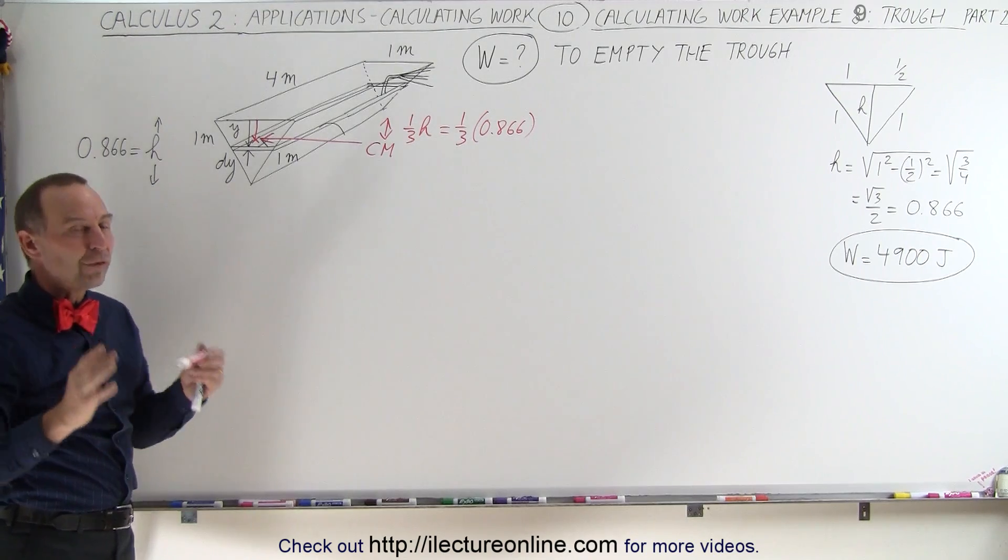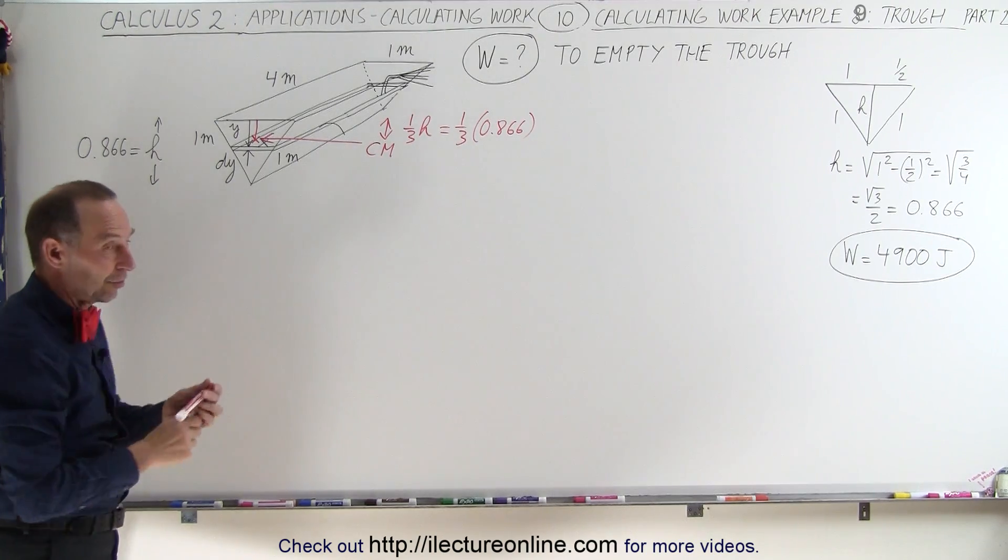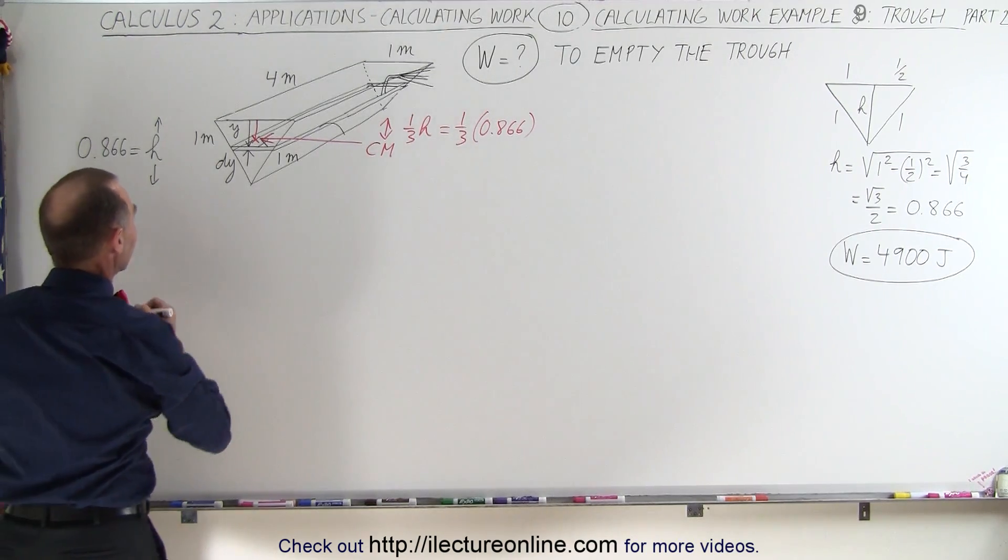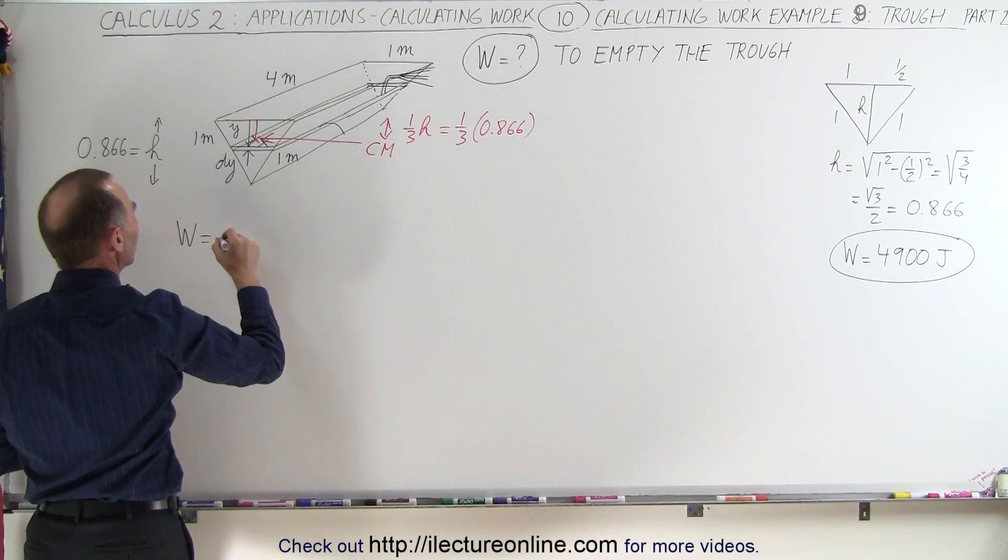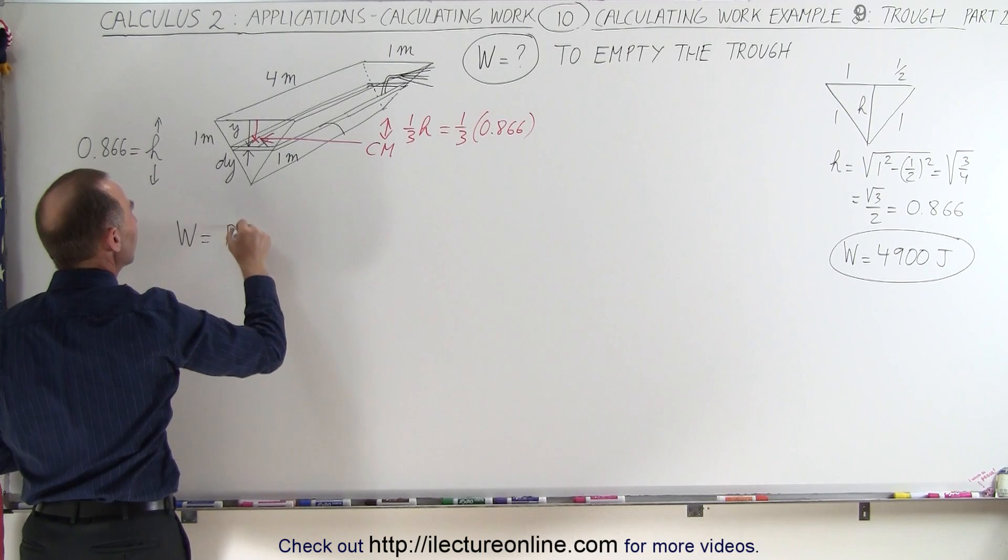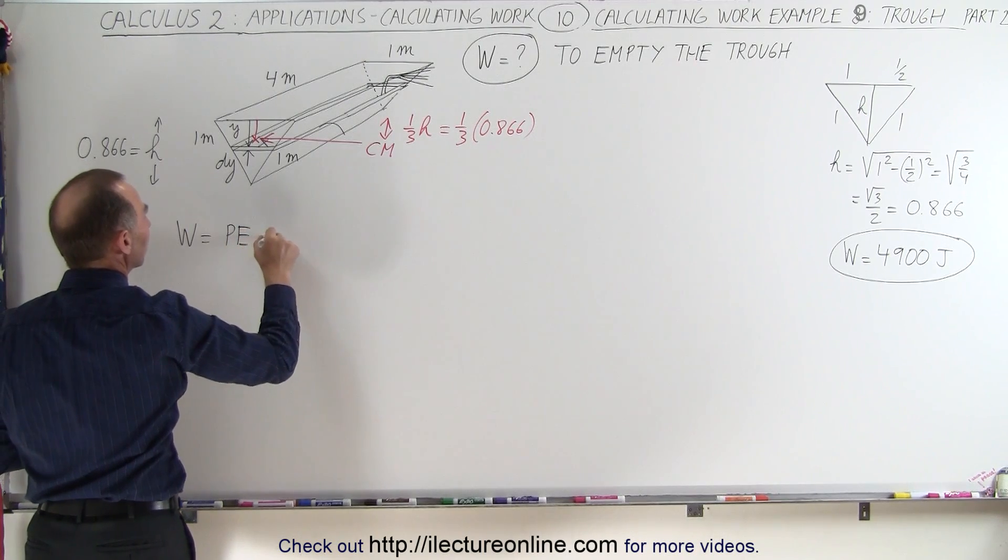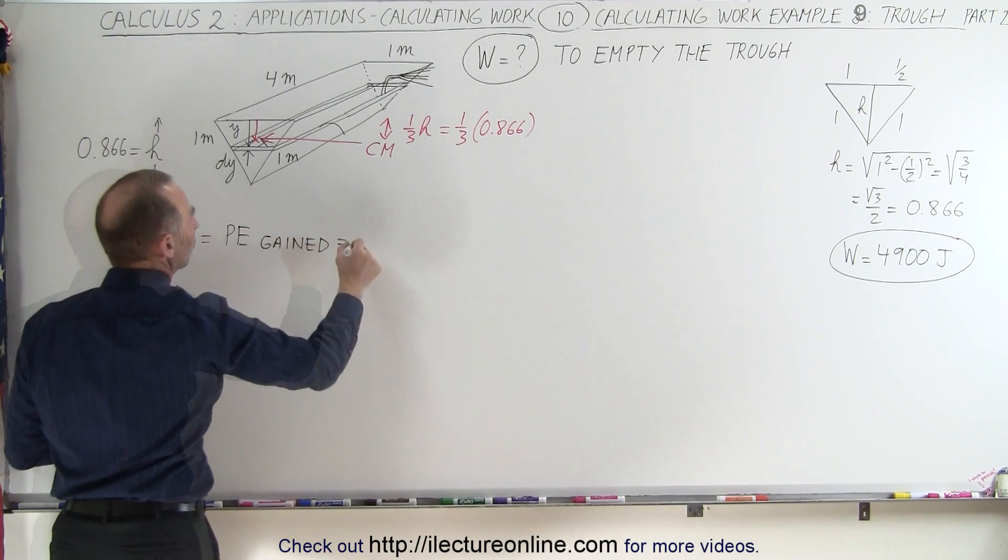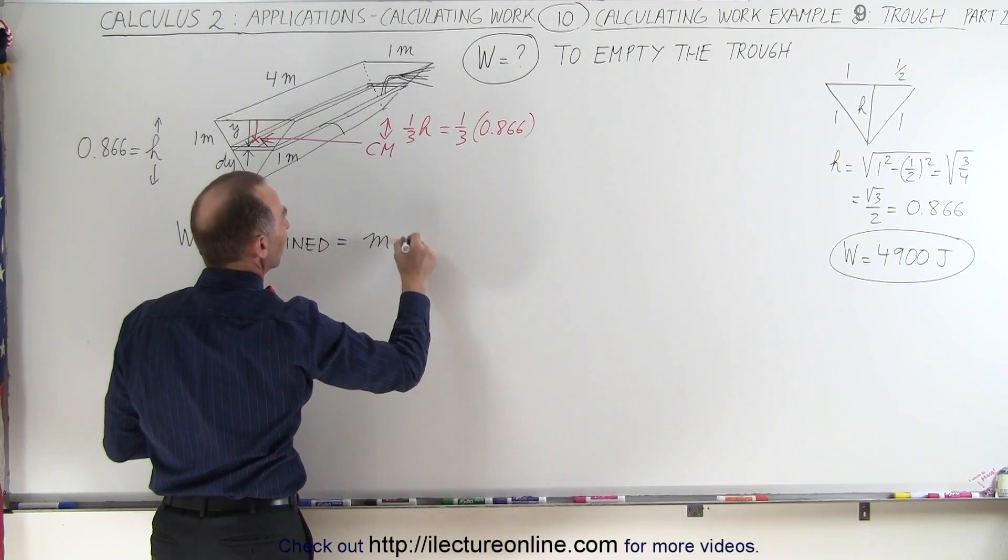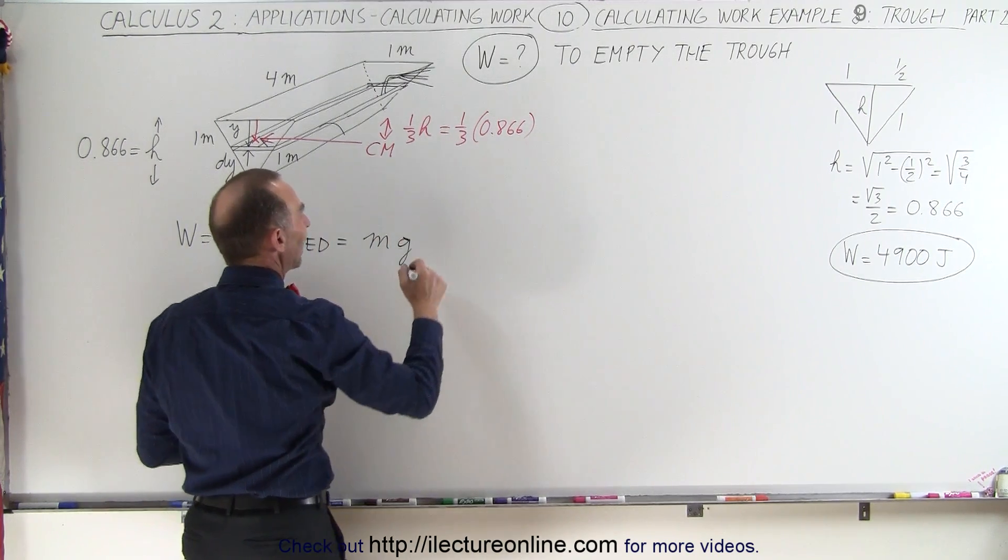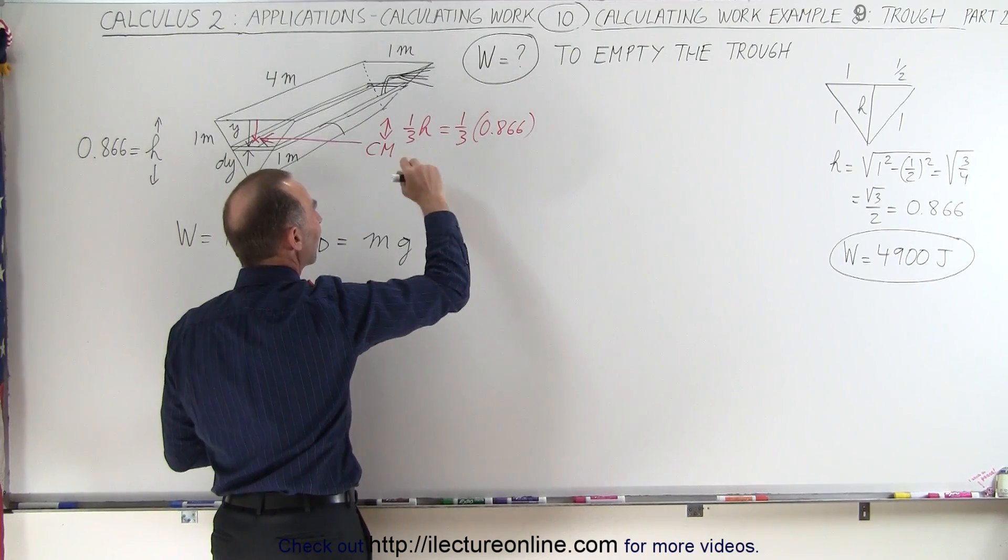Now we need to find the total volume and therefore the total mass. After all, what we're after here is that the work done to lift all the water out of the tank is going to be equal to the potential energy gained by all of the water, which is equal to the mass times acceleration due to gravity times the height gained.